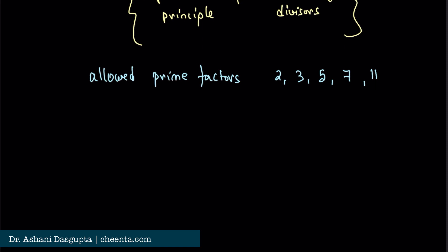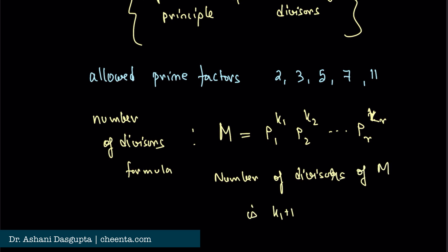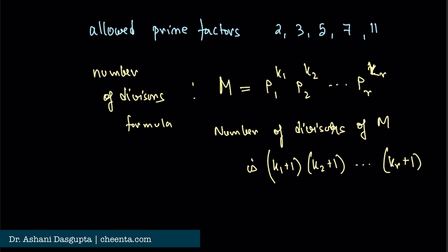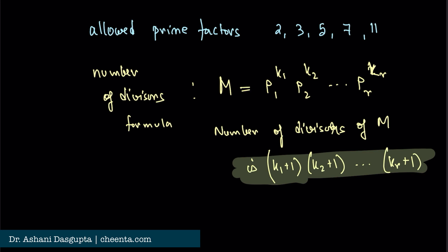We want to show that at least one of these numbers is a perfect cube. We will be using something like pigeonhole principle and the number of divisors formula. This is the divisor formula: if a number M has a prime factorization p1^k1 × p2^k2 up to pR^kR, then the number of divisors of M is (k1+1) × (k2+1) up to (kR+1). This is a well-known idea from elementary number theory.